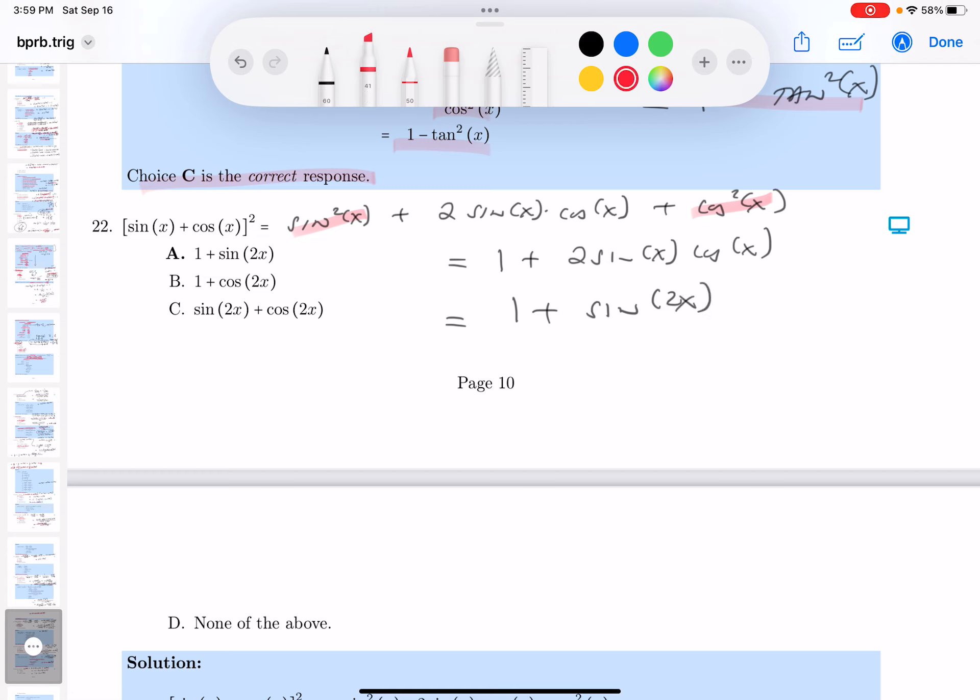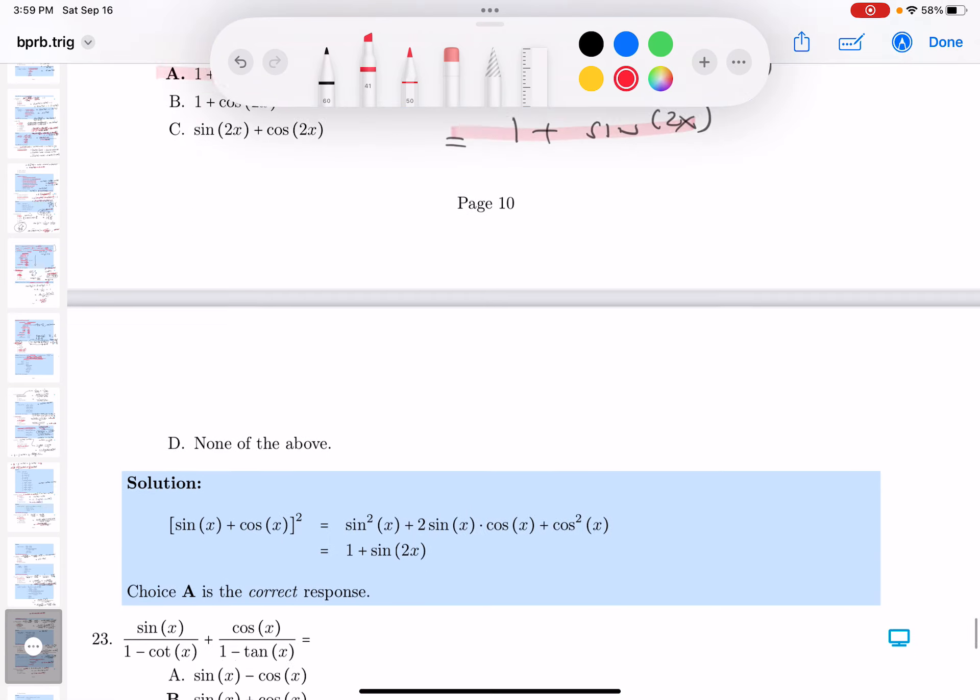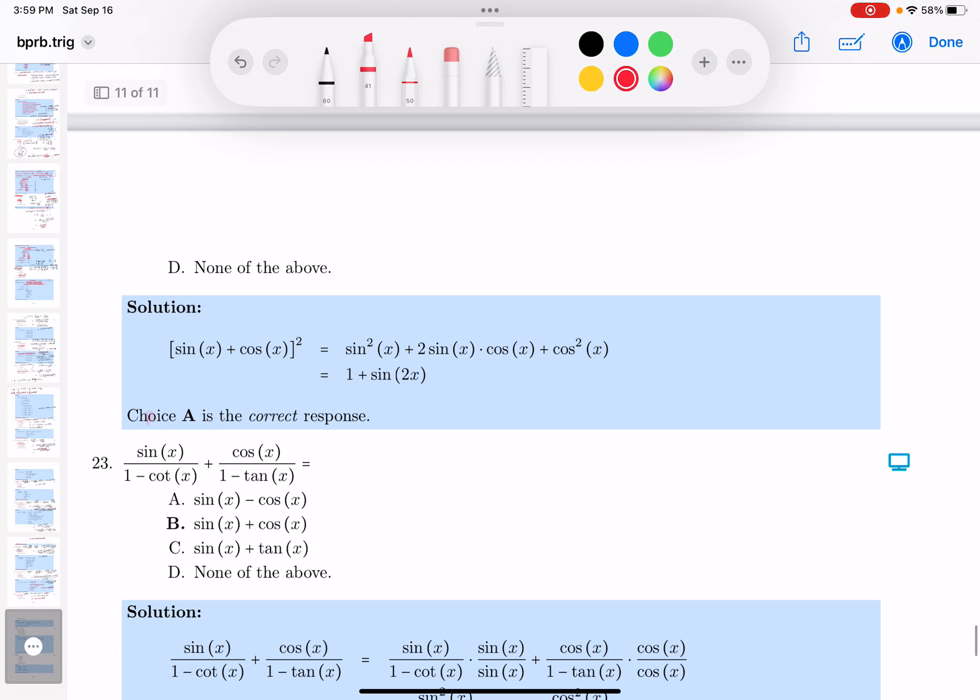Now granted, that may not be in the key, but let's take a look. And I clearly see it. It's choice A. Choice A, 1 plus sine 2x. And I want to go look at the key. Again, they say the correct choice.